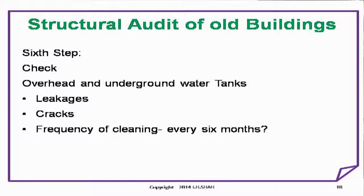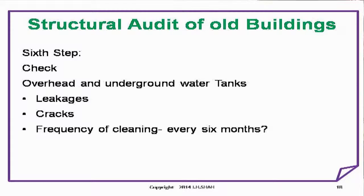Sixth step: check overhead and underground water tanks for leakages, cracks, and frequency of cleaning — every 6 months. Next, check plinth protection: is it available, any cracks or settlements, condition of paving. Check drainage lines, water lines for leakages, and drainage chambers for cracks and leakages.